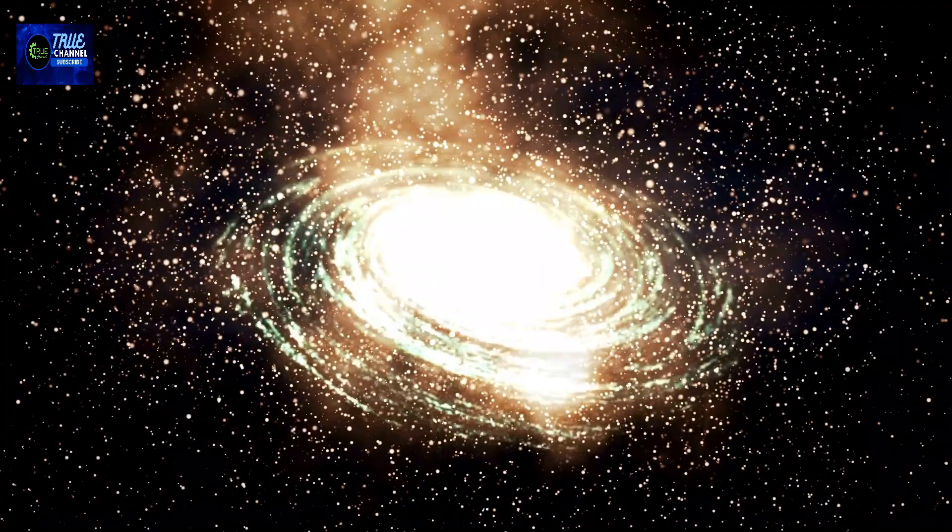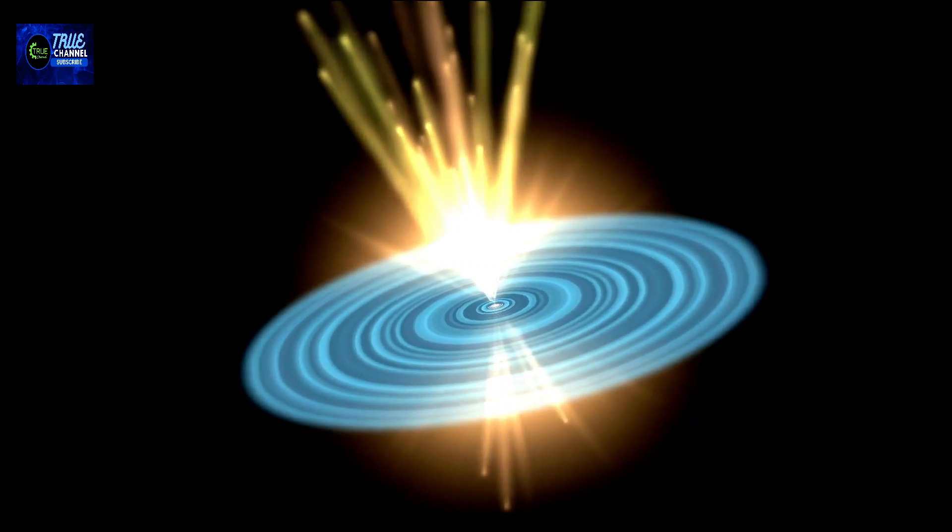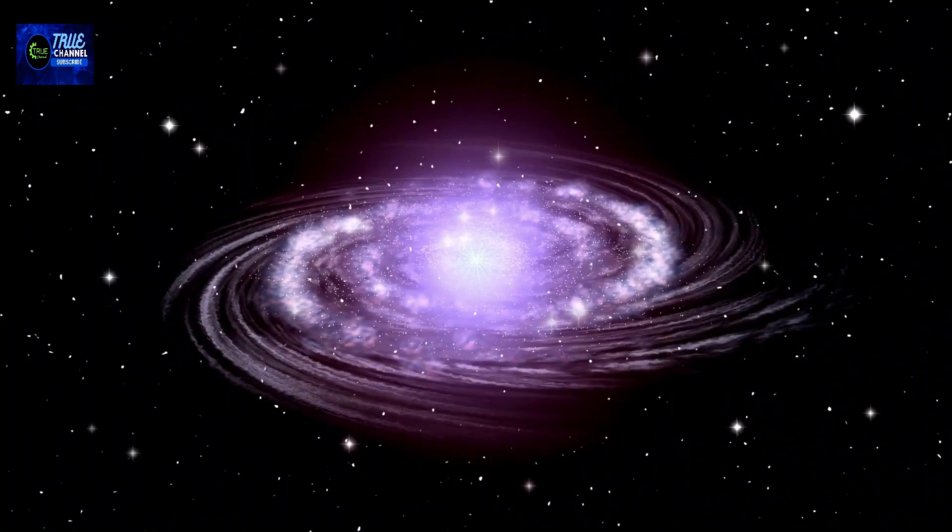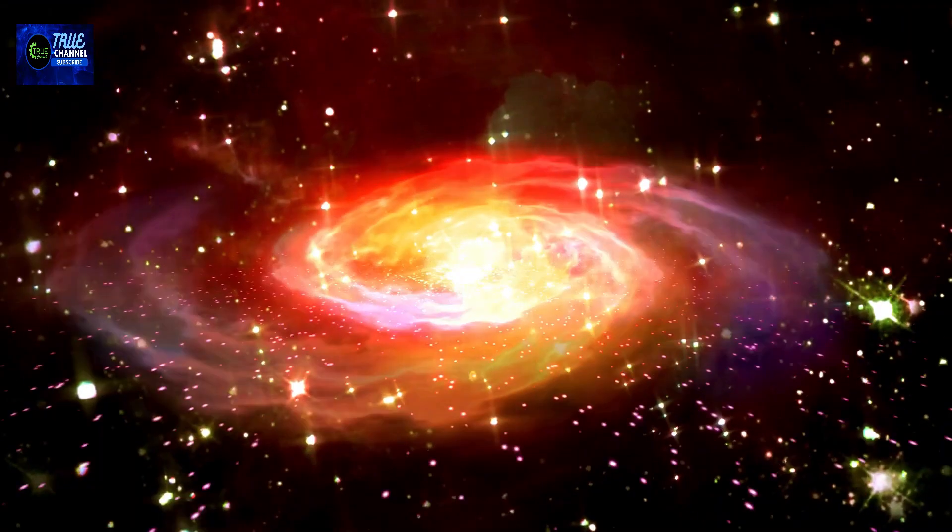The disc itself is estimated to be around 200 AU in diameter, which is approximately six times the size of our own solar system. At the center of the disc, there are two concentric rings of dust with a clear gap between them. This gap is thought to be caused by the gravitational influence of an unseen exoplanet that lies within the gap.